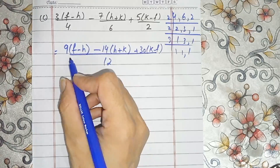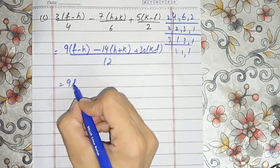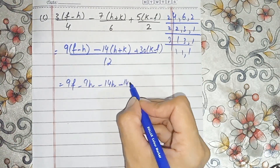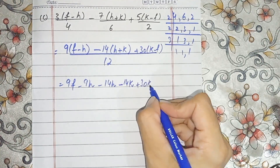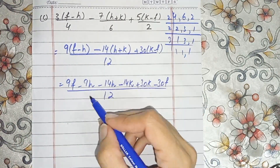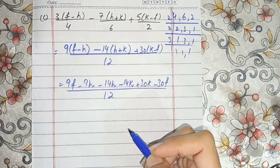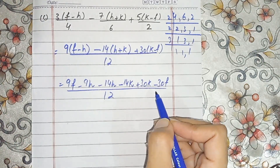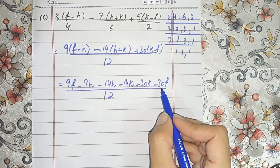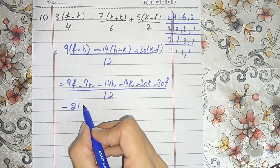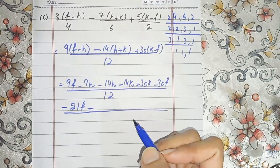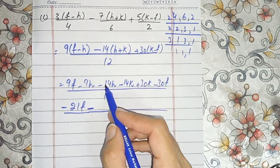Now expanding the brackets: 9f minus 9h, plus 14h minus 14k, plus 30k minus 30f, all over 12. Collecting f values: 30 minus 9 gives us 21f.